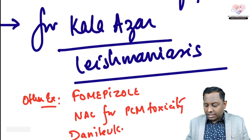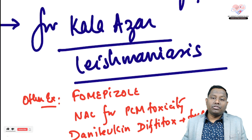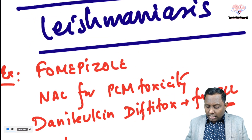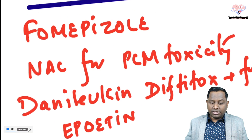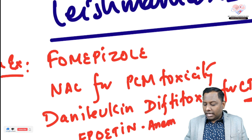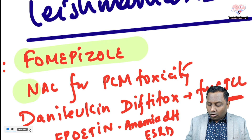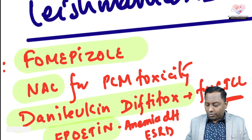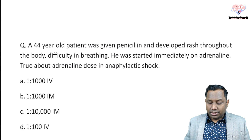For INICET, remember Denileukin diftitox, used for cutaneous T-cell lymphoma — also an orphan drug. Additionally, Epoetin and Darbepoetin, used for chemotherapy-induced anemia or anemia due to end-stage renal disease, also carry orphan drug status. So there are many important orphan drug examples to remember.